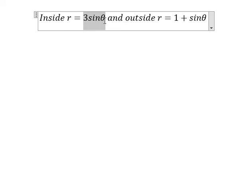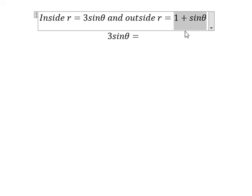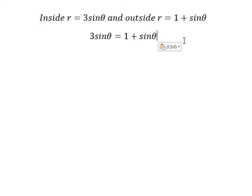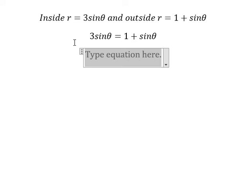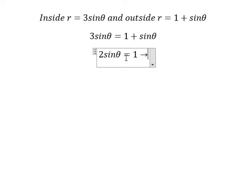First, we need to find the intersection of this one and this one. Next, we put sine theta to the left and we have 3 minus 1, we have 2. And we have sine theta equals to 1 over 2.